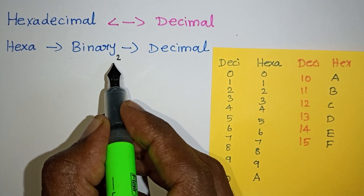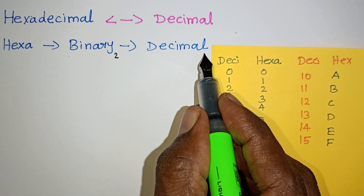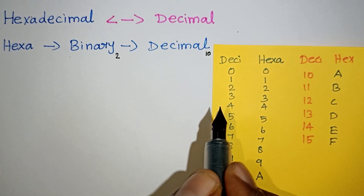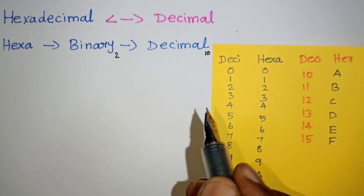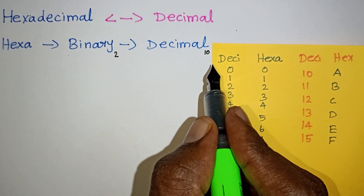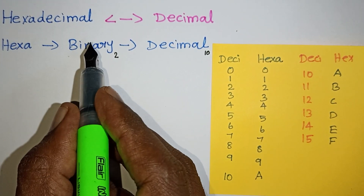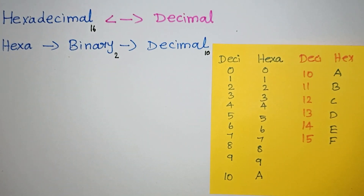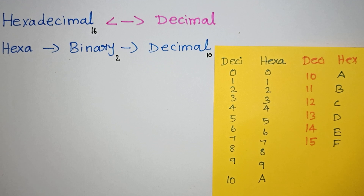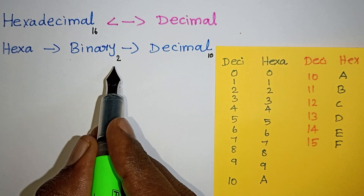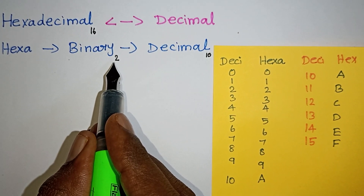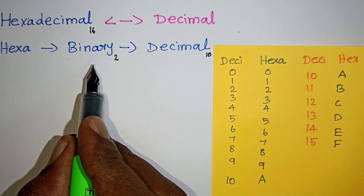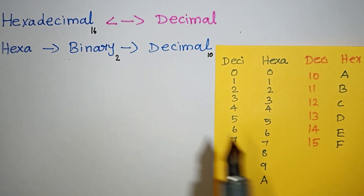For decimal, we usually use base 10 — ones place, tens place, hundreds place, thousands place. Hexadecimal has base 16. Binary has base 2, using only 0 and 1. These are the basics.